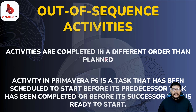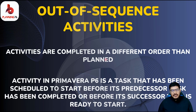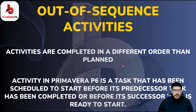Basically, for example, there are three activities: A, B, C — or one, two, three. Activity one is completed on time, but by skipping activity two, you start activity three. So activity two, or B, is now the out-of-sequence activity. The third definition is simply that activities are completed in a different order than planned.